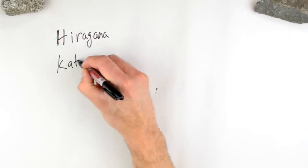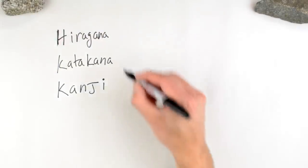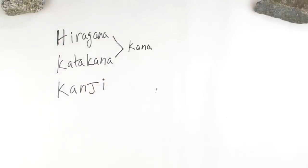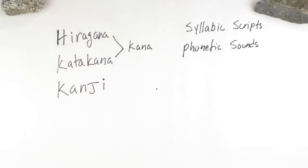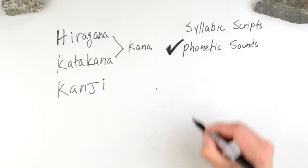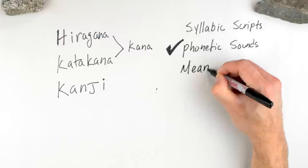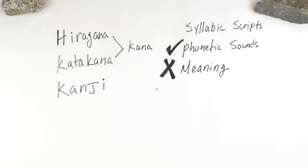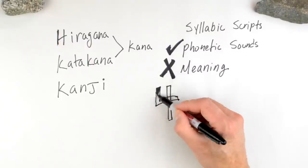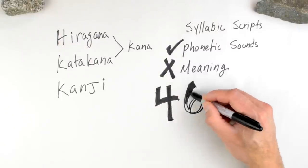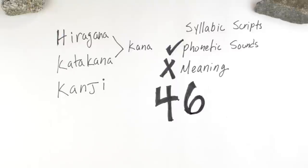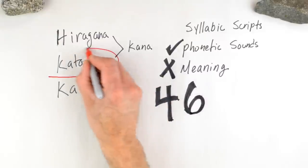Japan has three writing systems: the hiragana, the katakana, and kanji. The hiragana and katakana, together known simply as kana, are syllabic scripts. This means that each kana character corresponds to one sound in the Japanese language. Unlike kanji, these characters have no meaning. These sounds are always a consonant and vowel, or just a vowel. They both contain 46 characters. The difference is that hiragana is used for native words, while katakana is used for foreign words. For this reason, when translating Western names into Japanese, katakana is used.